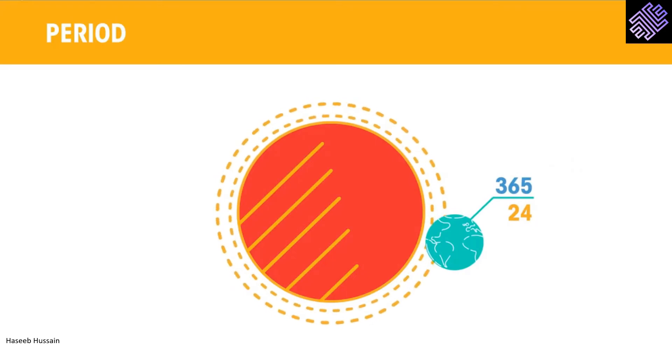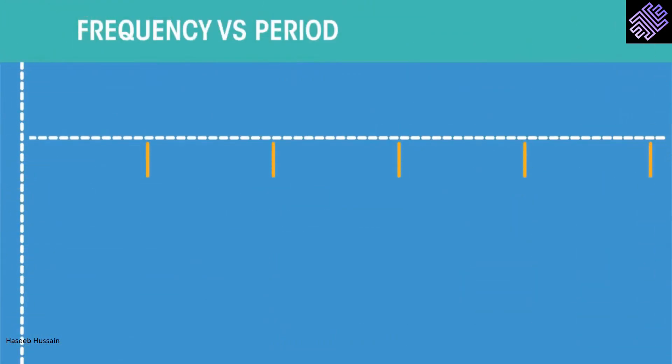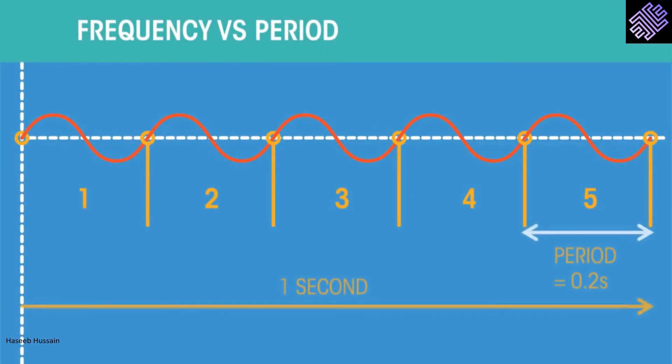The frequency and time period are often confused as they are related. Frequency refers to how often something happens, whereas the period refers to the time it takes to happen. Frequency is measured in Hertz while time period is measured in seconds. Frequency equals 1 divided by time period.